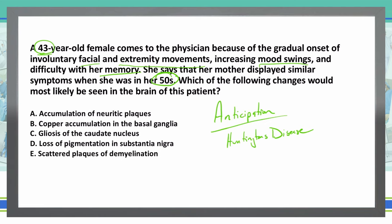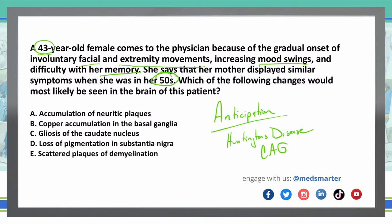Huntington's disease is a trinucleotide repeat of CAG. Going to this question, what are we looking for as far as changes in the brain of this patient? Huntington's disease affects the caudate and the putamen mostly, so let's see which answer choices can fit with that information.